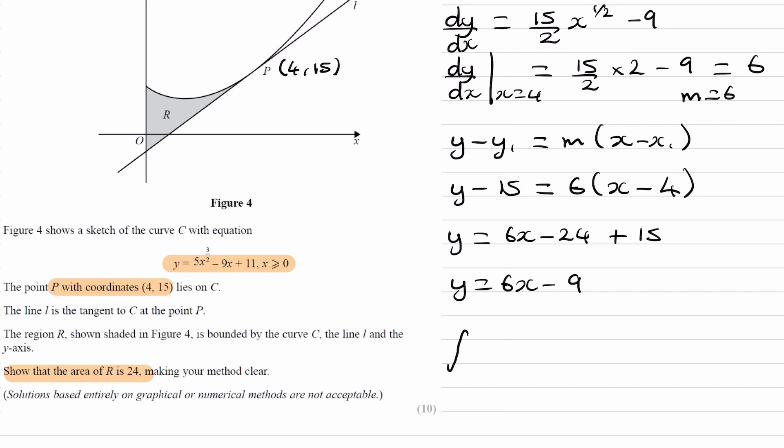I'll write out the integral of the curve first of all: 5x to the power of 3 over 2 minus 9x plus 11. The limits for this would be the x-coordinate of this point, which is 0, and then the x-coordinate of point P. So between 0 and 4 is what we're integrating.